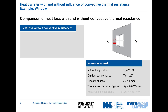Let's calculate the heat loss without convective resistances. The thermal resistance is the thickness delta_glass divided by the thermal conductivity lambda_glass, which results in 0.005 K/W. Introducing the indoor and outdoor temperatures into Fourier's law gives a heat loss of 8000 W/m². For a window of only one square meter, that translates to 8 kilowatts of heat loss.